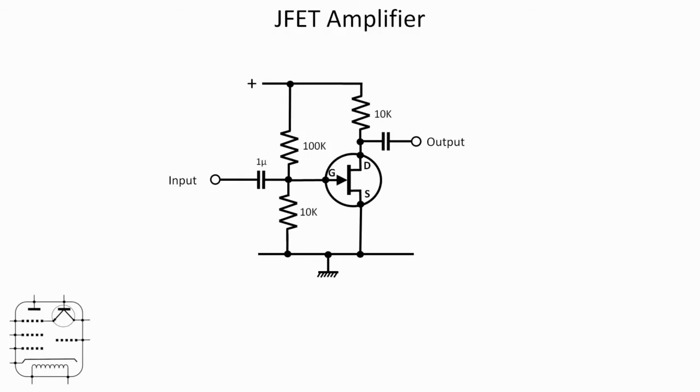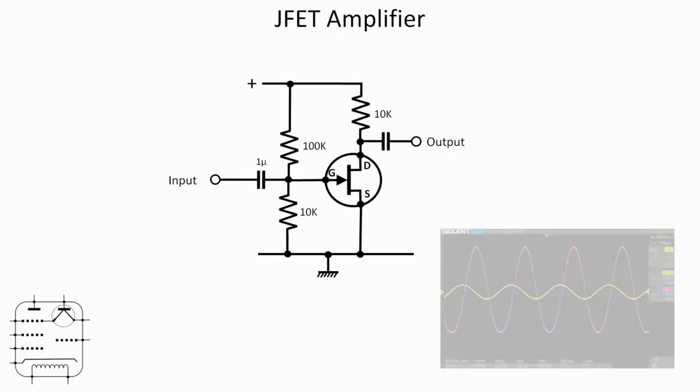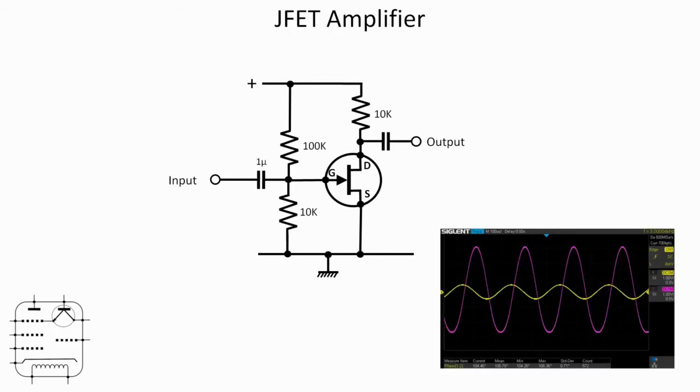Here's the circuit of the amplifier I've just been looking at. Input coming in through a coupling capacitor and we've got the biasing network for the gate consisting of a 1 megohm resistor. Then we've got the output taken from the drain with the source connected down to the negative rail. Here's the grab from the scope with measurement set up to check the phase, getting a mean phase difference between input and output of about 105 degrees.